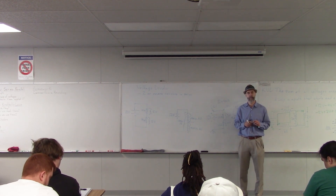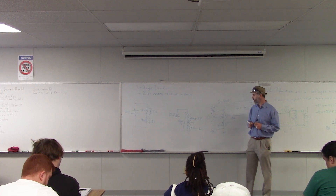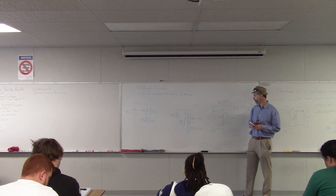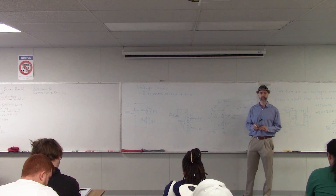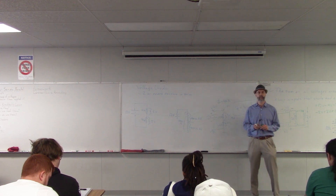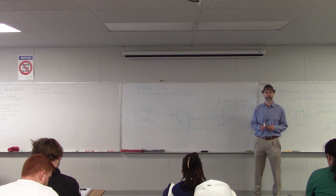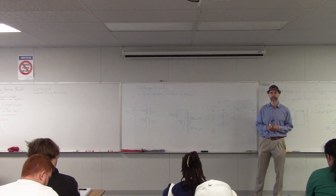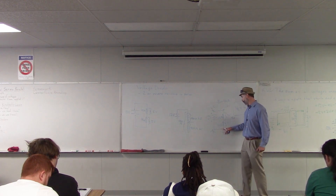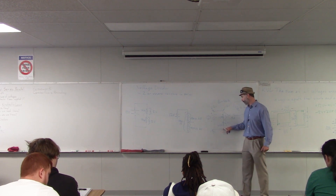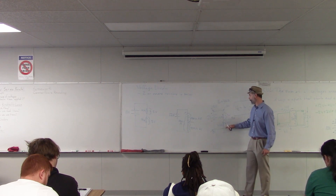A student asks about a past lecture where a point was identified as zero volts. The instructor clarifies: the ground symbol just defines that point as zero volts. We place a ground there to set our reference. Everything else in the circuit is measured relative to that defined zero-volt point.